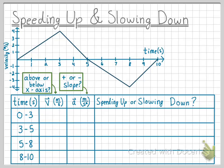Let's first start with the time interval 0 to 3 seconds, which covers this portion of the graph. We see that we start at a velocity of 0 meters per second and then increase to 1, then 2, and all the way to 4 meters per second. All the velocities are positive and the line is above the x-axis, so we know that the velocity is positive. The slope of this red line is also positive, and therefore the acceleration is positive.